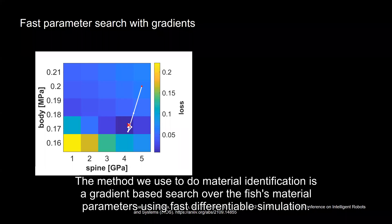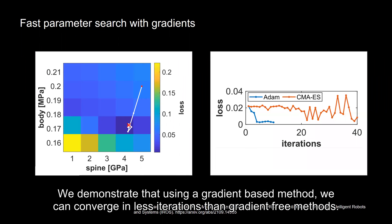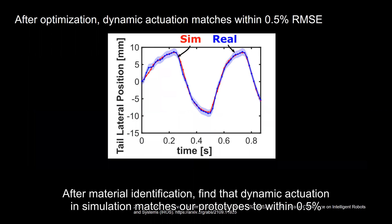The method we use to do material identification is to do a gradient-based search over the fish's material parameters using fast differentiable simulation. We demonstrate that using a gradient-based method, we can converge in fewer iterations than gradient-free methods. After material identification, we find that dynamic actuation and simulation matches our prototypes to within 0.5%.